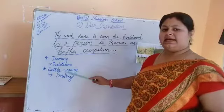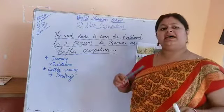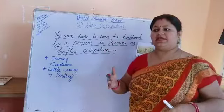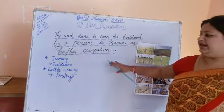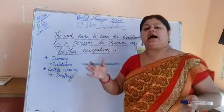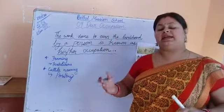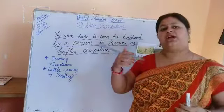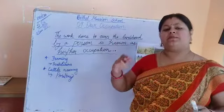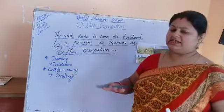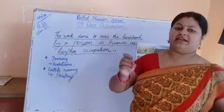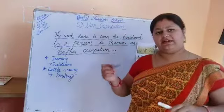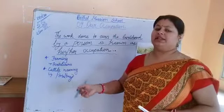The second occupation is cattle rearing. The arrangement of keeping a large number of animals is known as cattle rearing. A large arrangement is done where cow, goat, buffalo, sheep are kept — they are being taken care of and food is being provided to them. Milk or wool are obtained, and cow dung is used for biomass energy. The products of animals are obtained and sold in the market.